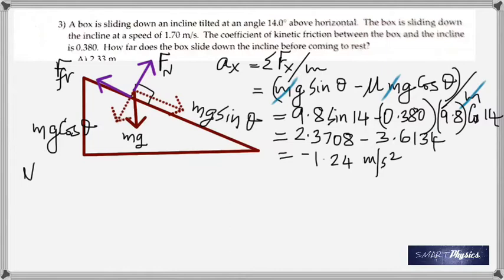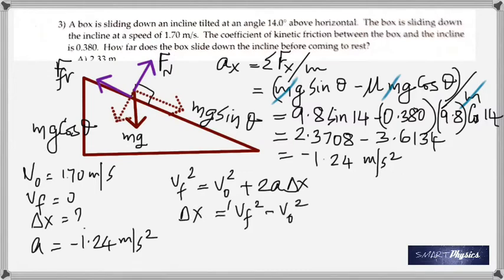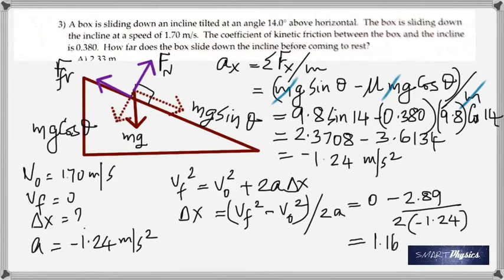It's slowing down. Now use the kinematics equation. The initial velocity is 1.70. Final is 0. Got to find delta x. And acceleration is negative 1.24. Use the equation. Vf squared is equal to v naught squared plus 2a delta x. Rearrange and calculate for delta x. And you get the answer as 1.16 m.